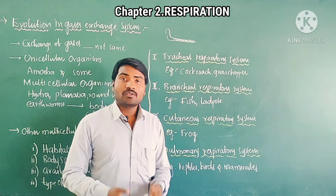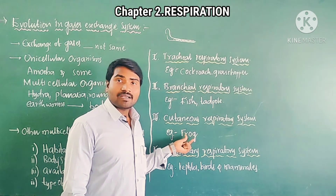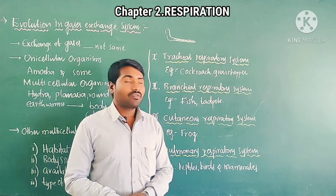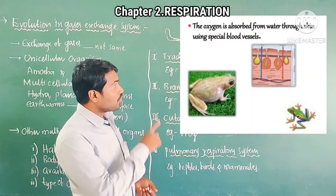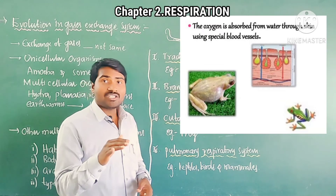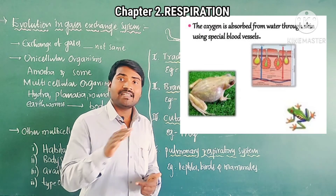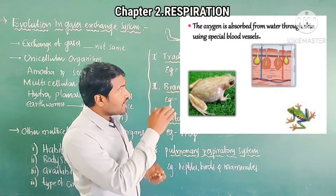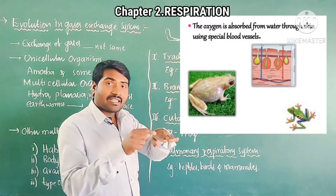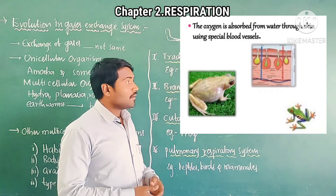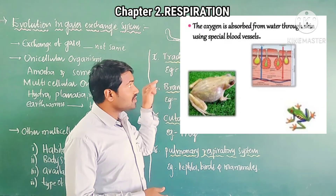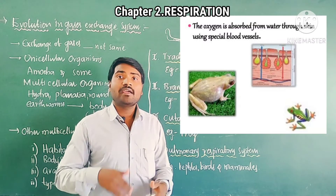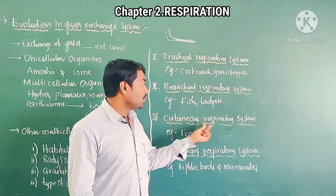Next is the cutaneous respiratory system. It occurs in frogs. If respiration takes place through the skin, that is called cutaneous respiration. The skin is very moist. Below the skin, the subcutaneous layer contains many blood capillaries — the skin is very rich in blood capillaries. Air directly enters through the moist skin, and carbon dioxide exits from the skin. So the skin helps in the exchange of gases. This process is called cutaneous respiration.